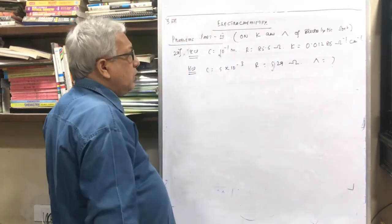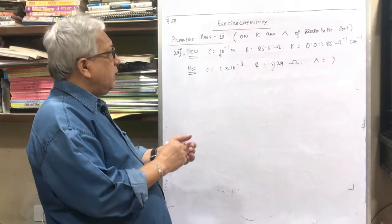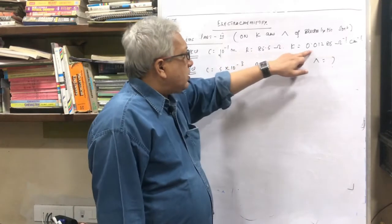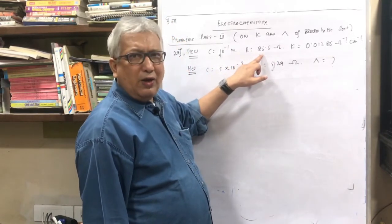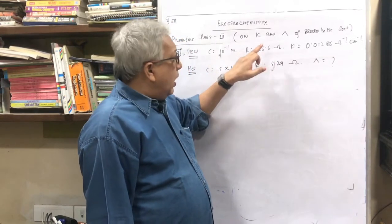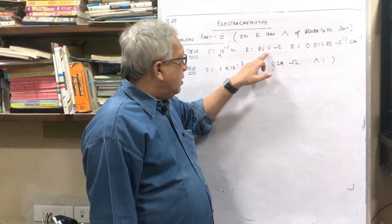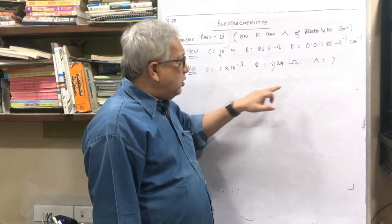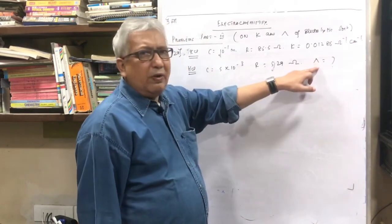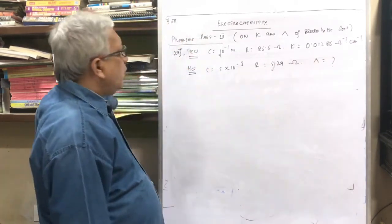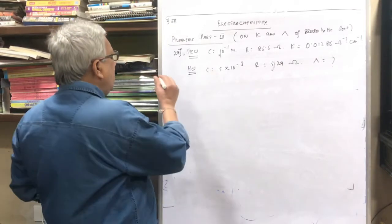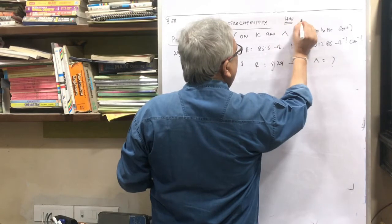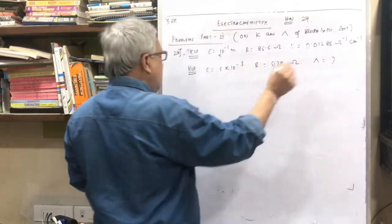This problem I will give you as homework, but I will discuss the approach. Using R and K of KCl you find out the value of B, and after finding B, using B and R of HCl you find out K, then K × 1000 upon C gives lambda — just like problem 28. Problem number 29 is given as homework.